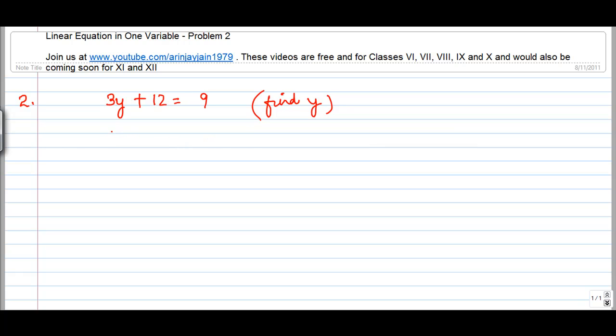Again as I said, the first step is reduce 12 from both sides. Now, what does that do for me? 3y plus 12 minus 12 is equal to 9 minus 12.